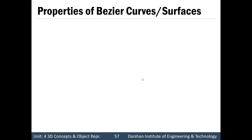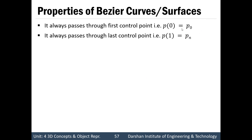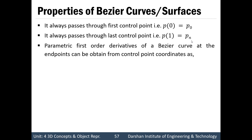Next topic is properties of Bezier Curves. Bezier Curves have several properties. First, it always passes through the first control point: P(0) equals P0, meaning it always starts from the first control point. Second, it always passes through the last control point, so P(1) always equals Pn. Third, the parametric first-order derivative of a Bezier Curve at the endpoints can be obtained from control point coordinates: P'(0) equals negative n*P0 plus n*P1, and P'(1) equals n*(Pn minus Pn-1).